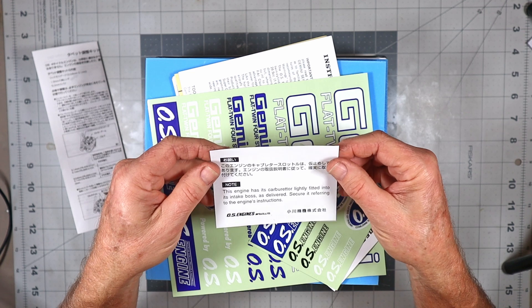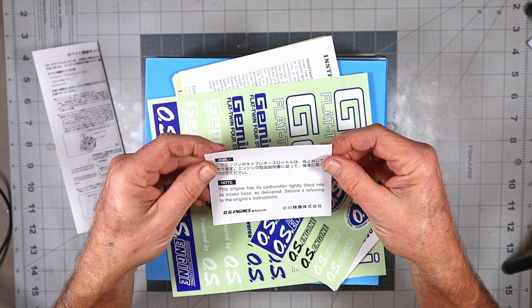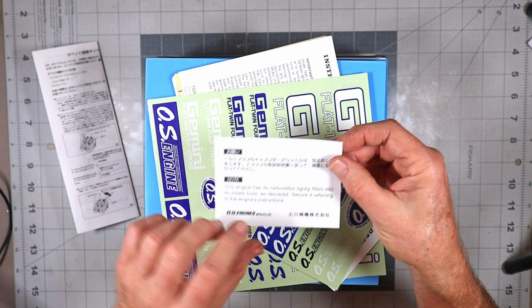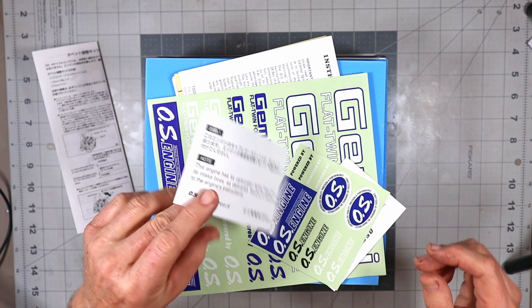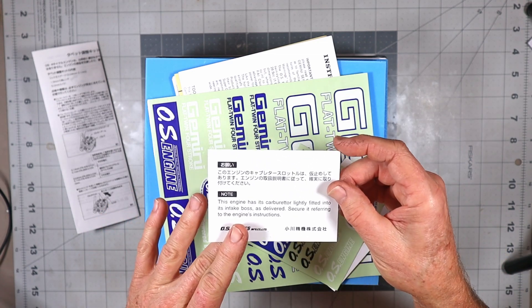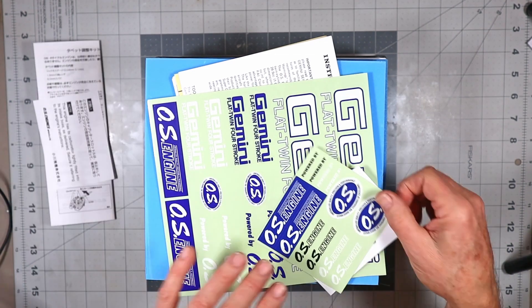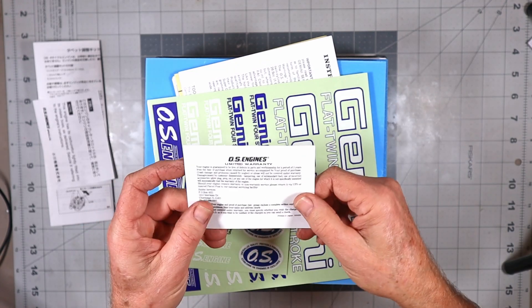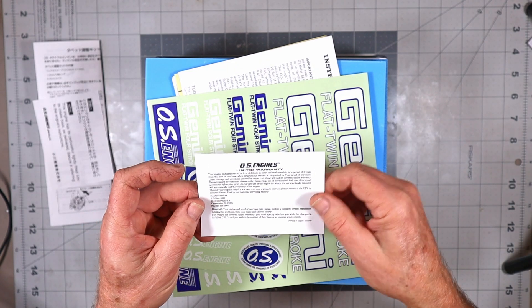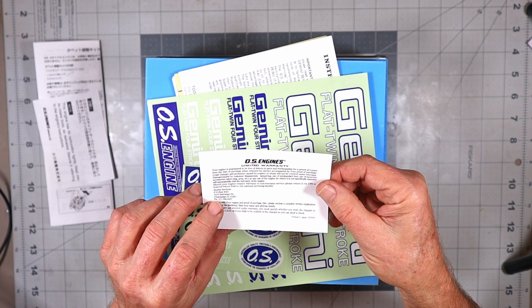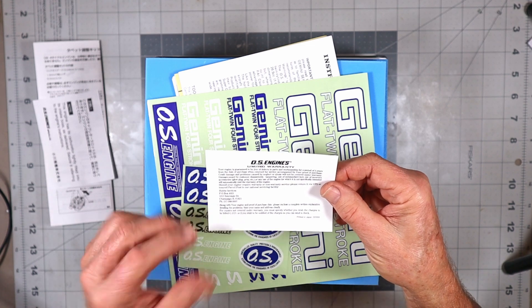It says the carburetor is lightly fitted into the intake boss and needs to be secured. They're making it sound like the carb is not fully seated, I'm not sure about that. We've got the standard OS limited warranty from Hobby Services in Champaign, Illinois.